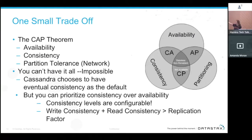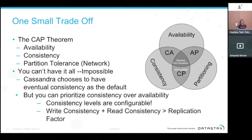Cassandra chooses to be highly available, so by default it has eventual consistency. However, you can prioritize consistency over availability — these are all configurable. Think about whether your data requires strong consistency, like financial data, or not, like likes on a Twitter tweet. The rule is: write consistency plus read consistency greater than the replication factor gives you strong consistency.